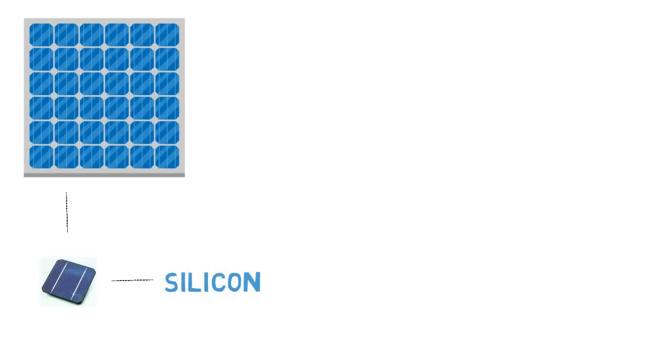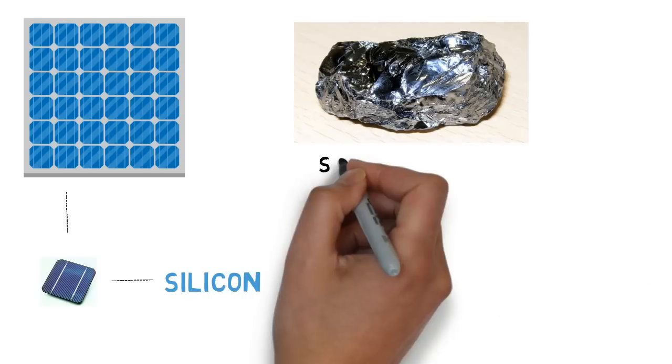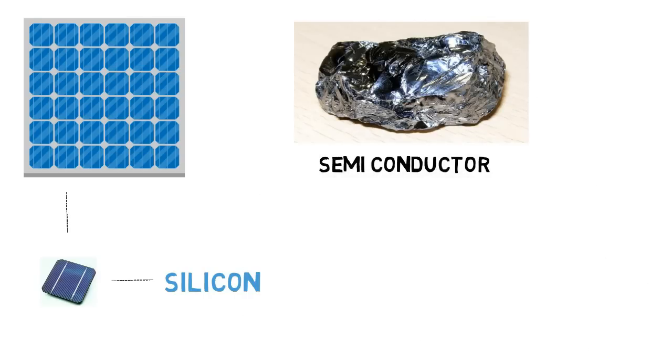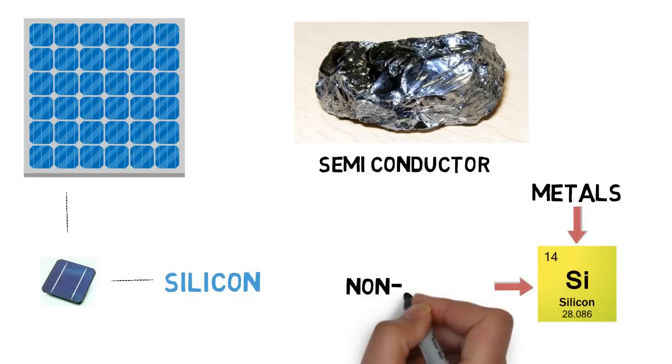Silicon is what is known as a semiconductor, meaning that it shares some of the properties of metals and some of those of non-metals, making it a key ingredient in solar cells.